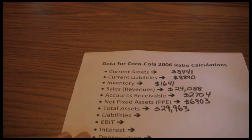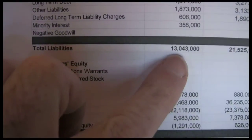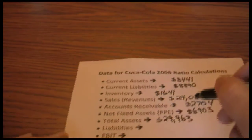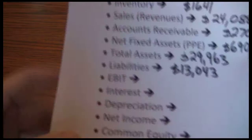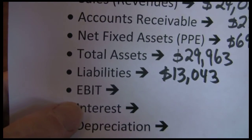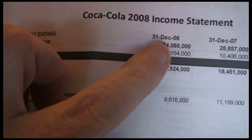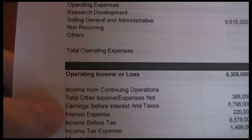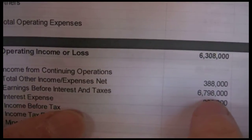Next up we need our liabilities — total liabilities — which are also on the balance sheet. Total liabilities are $13,043. Next up on the list we see EBIT, earnings before interest and taxes, which is on the income statement. Going back to the 2008 income statement for the 2006 fiscal year, as we scroll down the list we see earnings before interest and taxes — that EBIT — and that is $6,798.